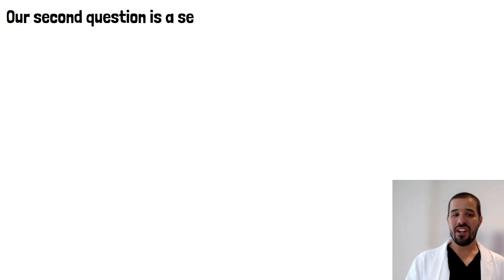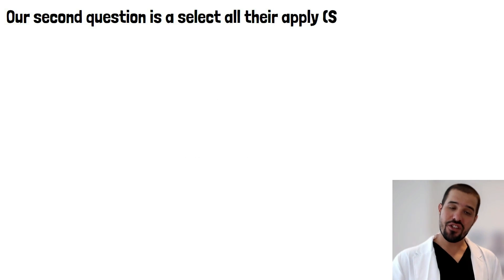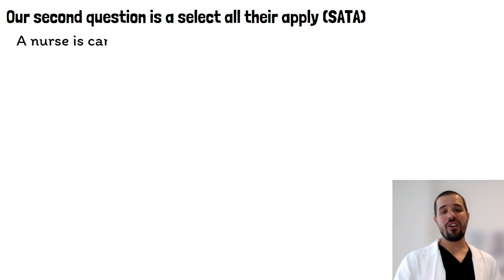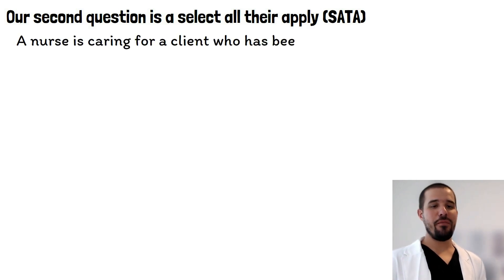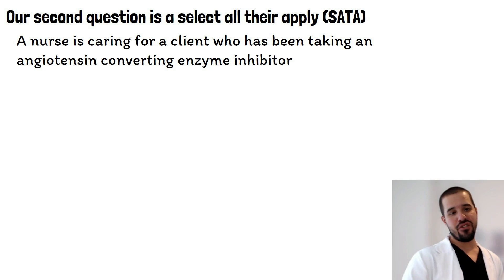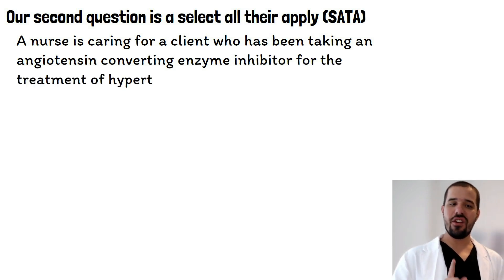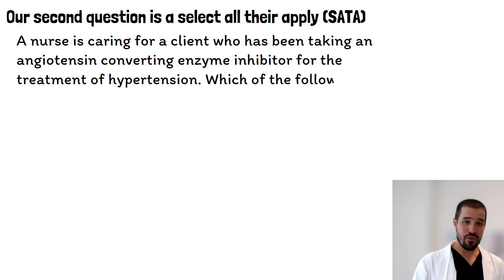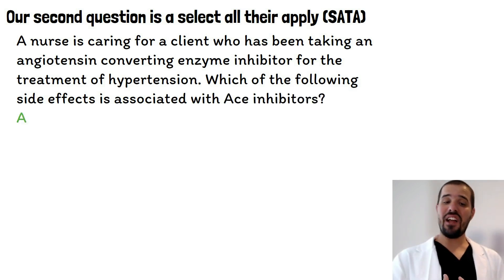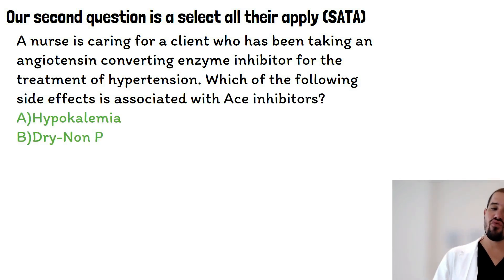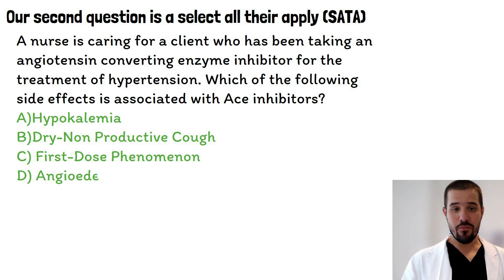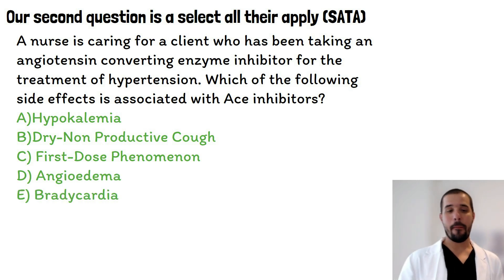Our second question is a select all that apply. A nurse is caring for a client who has been taking an angiotensin converting enzyme inhibitor for the treatment of hypertension. Which of the following side effects are associated with ACE inhibitors? We need to identify which ones are and which ones are not. Options: A) hypokalemia, B) dry non-productive cough, C) first dose phenomenon, D) angioedema, and E) bradycardia.